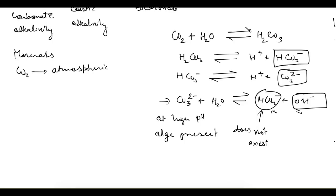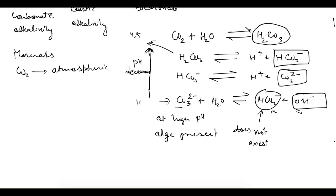All these reactions take place in a specific order with respect to pH. The last reaction (caustic alkalinity) occurs at a maximum pH of around 10 to 11 and above. As we go upward in the reaction sequence, pH decreases. The bicarbonate alkalinity is consumed at a pH of 4.5, and if pH is further decreased, the species converts into carbonic acid.